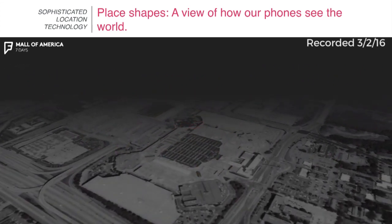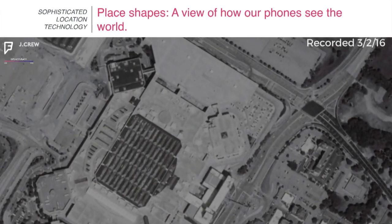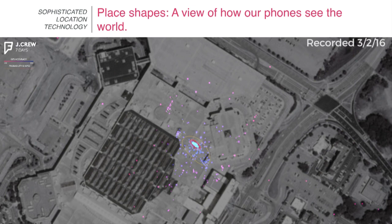It's pretty hard to understand that the J.Crew, however, which is this shape, is on the second floor — which we understand through Wi-Fi triangulation and beacons and the GPS shape of that. There's no way you can understand that from satellite, but we understand the shape.